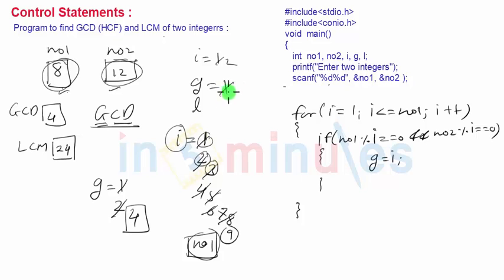So g will store value of i, that is 2. Then i becomes 3, the condition is false. Continuing through 4, 6, 7, 8, when i becomes 9 the for loop will stop. As the loop stops we have value of g as 4.